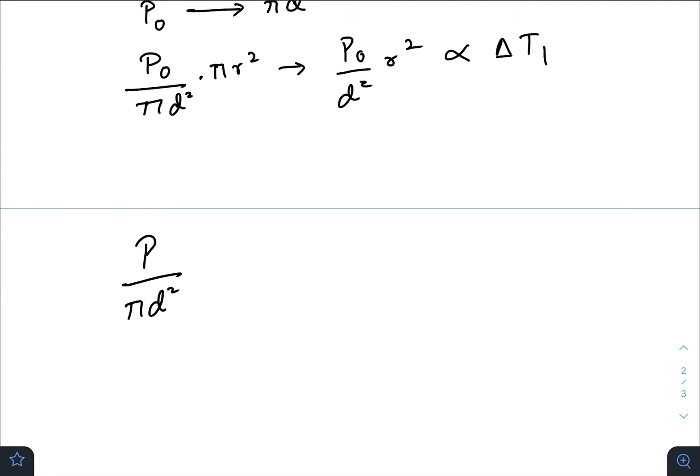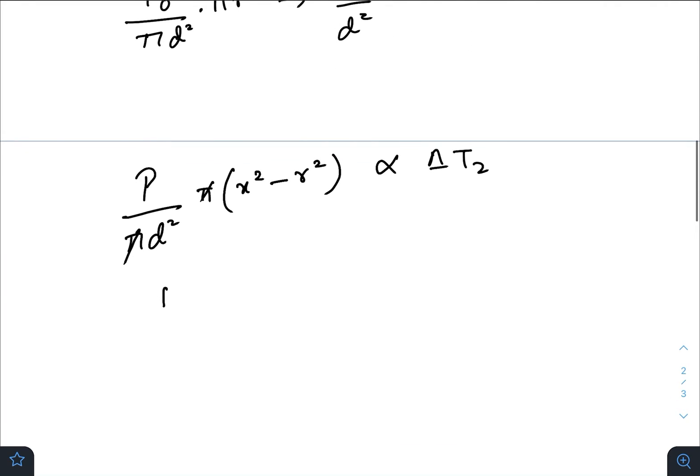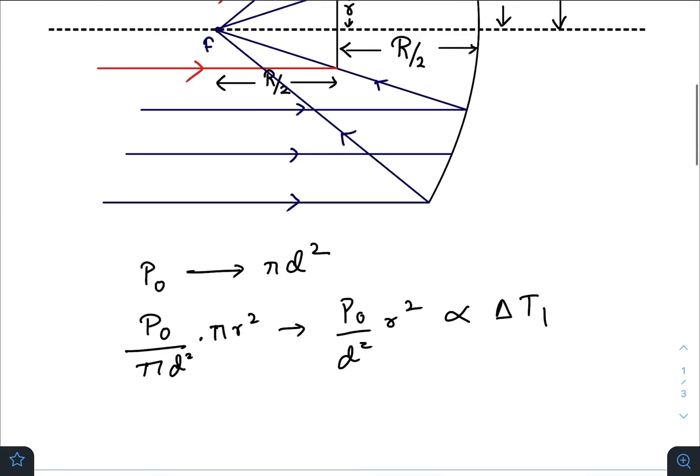You can write the same kind of formula again. The cross sectional area produced by that annular region is pi x square minus r square, and that would be directly proportional to del t2.